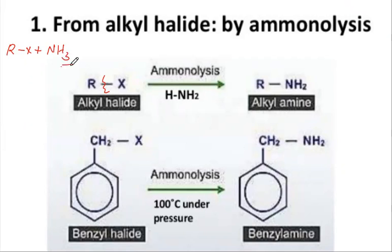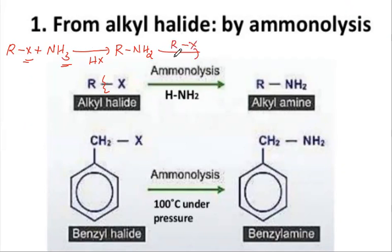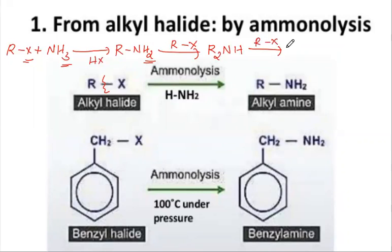Whenever alkyl halides react with ammonia, one hydrogen atom from ammonia and the halogen atom are removed as hydrogen halide. What is left is RNH2 — a primary amine. This amine molecule then reacts with alkyl halide again; one hydrogen atom from nitrogen and one halogen atom leave, forming R2NH — a secondary amine.